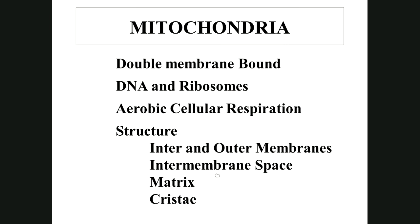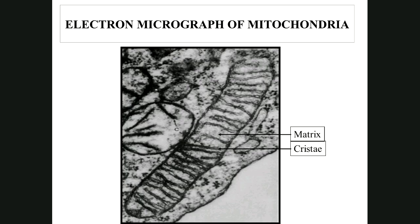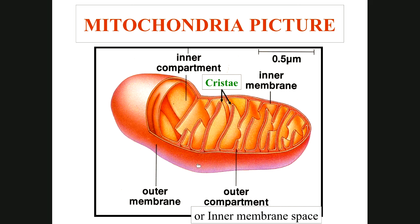Here's an electron micrograph of a mitochondrion — it looks like a little peanut with two membranes. The outer membrane forms the outer wall; the inner membrane forms folds called cristae that project inward, greatly increasing the surface area for ATP production. The fluid inside is called the matrix; the space between the outer and inner membrane is called the intermembrane space. Both are important for ATP synthesis.